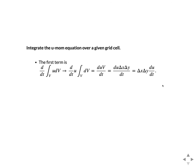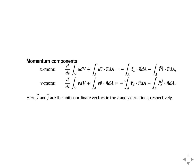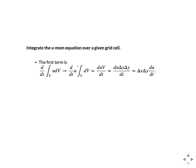We integrate the u momentum equation over a given grid cell. For the first term, the integral d/dt of the integral of u dV over the volume: because u is assumed uniform in the volume, we can pull it outside the integral, giving d/dt of u times the integral of dV. The integral of dV is just V, which equals delta x times delta y, a constant we can pull outside the derivative. So the first term simply becomes delta x delta y times du/dt.